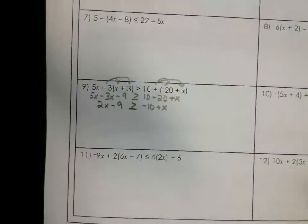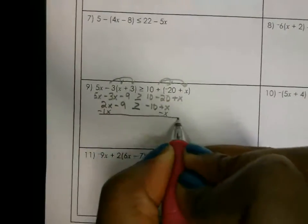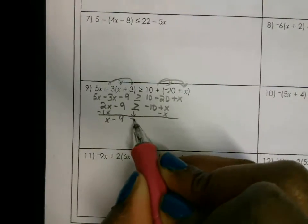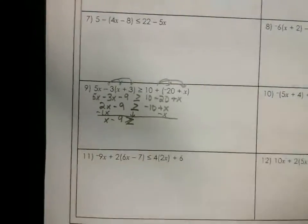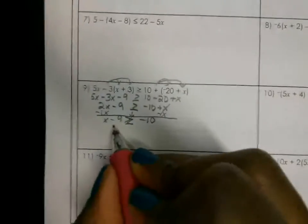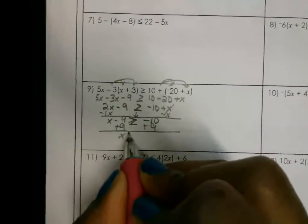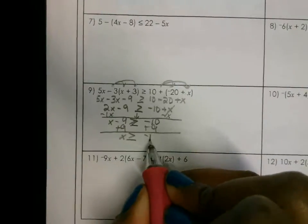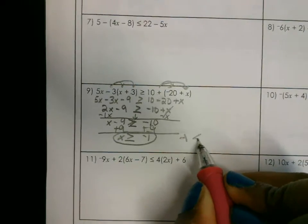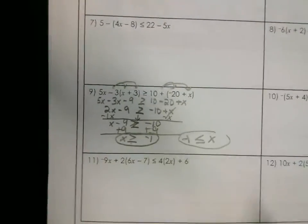We have variables on both sides. I'm going to move the smaller one — I'm going to subtract 1x on both sides. This is going to give me just x here minus 9, bring down the greater than or equal to, and this is gone and we're left with negative 10. We're going to add 9 on both sides. This gives us x greater than or equal to negative 1, which is the same as saying negative 1 is smaller than or equal to x — the x is bigger. They're saying the same thing.